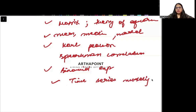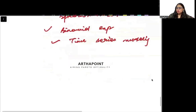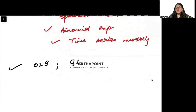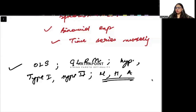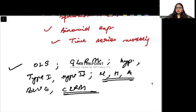Now we will talk about Econometrics. In econometrics, we know what all can be asked in the exam: ordinary least squares method, general linear regression model, hypothesis testing, type 1 error, type 2 error, multicollinearity, heteroscedasticity, autocorrelation, what are BLUE estimates, and what are the assumptions of the CLRM.